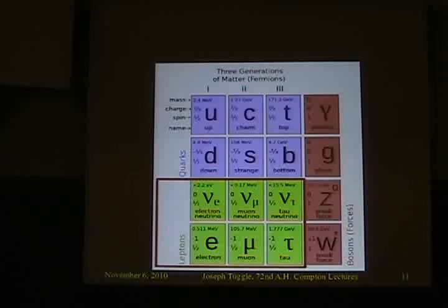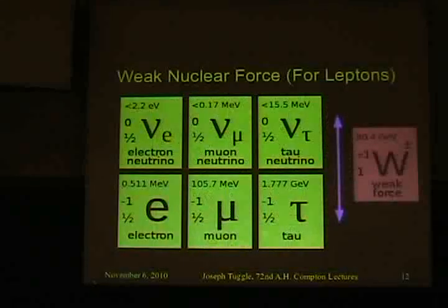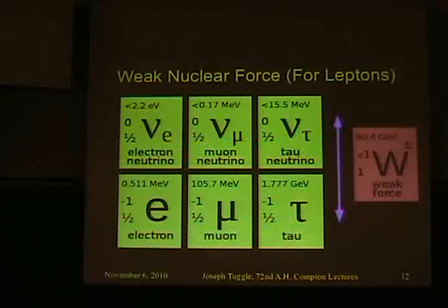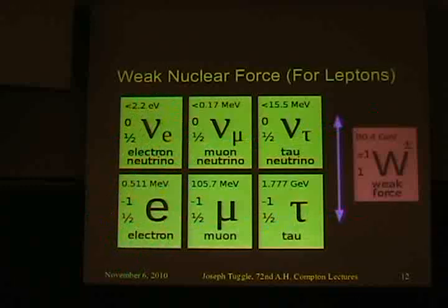What can we say about the leptons? They do experience the weak nuclear force, which allows communication between the upper row and the lower row. The other half of nuclear beta decay — when you spit out an electron and a neutrino — comes from this side, with these particles communicating through the weak force, which in turn communicates with the up and down quarks.